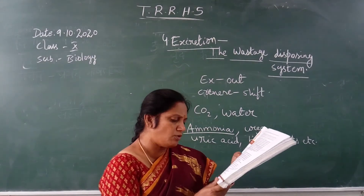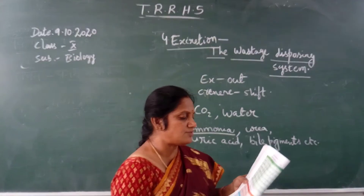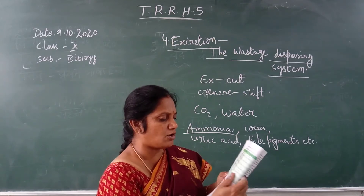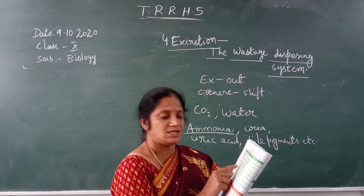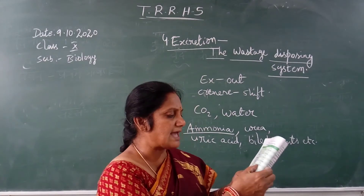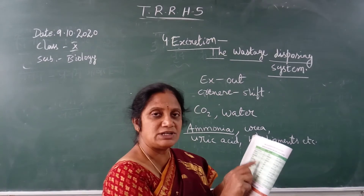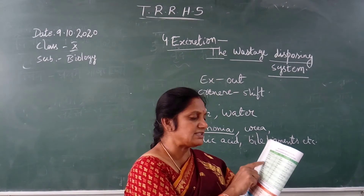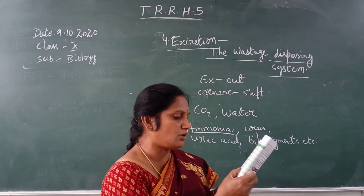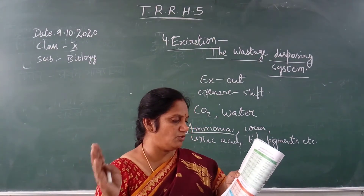Then, which substances are present above the normal limits in both the blood and the urine? When you observe here, creatinine is 2.8, but the normal range is 0.6 to 1.5. Uric acid — the normal range is 3.25, but here it is 7.5, so it has to be eliminated. The total cholesterol normal range is up to 200, but here it is 221, so it also has to be removed from the blood.